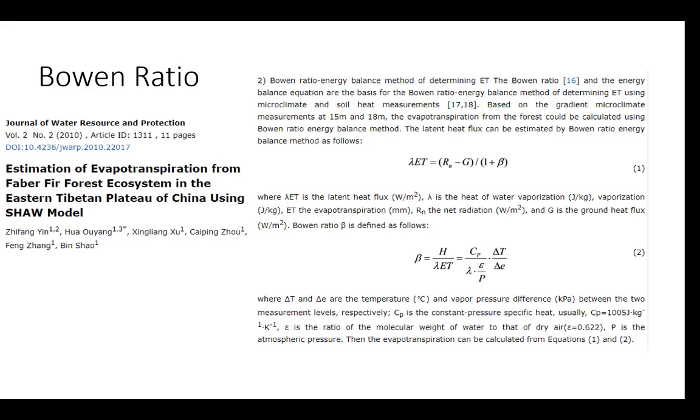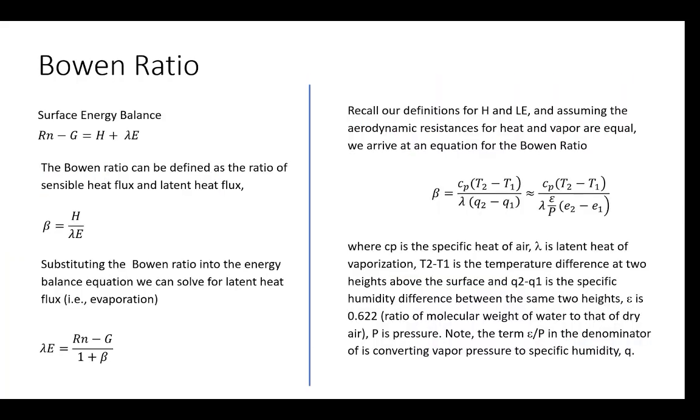The Bowen ratio can be used to measure the latent heat flux from the field. If we go back, we see that if we can measure the Bowen ratio and measure Rn and G with a net radiometer and soil heat flux plates, we can solve for latent heat flux. We can solve for ET. So hey, this doesn't sound too bad, right? A couple of measurements above the surface and I can get my estimate of ET.